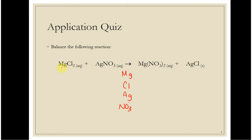Here I have magnesium — there's no subscript, so I only have one. Chlorine has a subscript of two, so there are two. One silver. There's no parentheses around this, so I only have one polyatomic ion here. On the right, I have one magnesium, one chlorine, one silver, and two nitrates — see the parentheses with the subscript two.